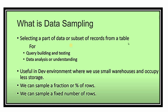Selecting a part of data or a subset of records from a table is called data sampling. For example, you want to extract a thousand rows from one million records for sample analysis or testing. The uses of data sampling include query building, testing, data analysis, and better understanding of data. A testing team with one million records in a table can use sampling to query just a thousand, two thousand, or fifty thousand rows for their testing.